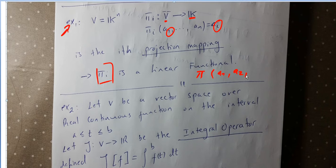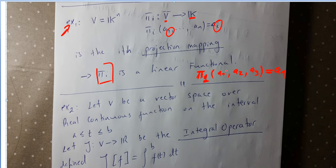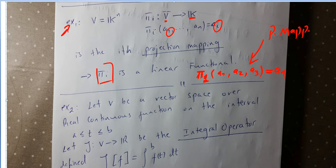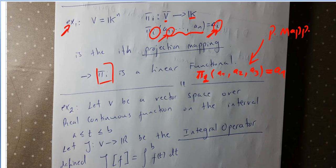For instance, pi_1 of (a1, a2, a3) equals a1. So for any i, pi_i takes one of the components — it maps the entire vector space into one of the scalar components. That is the projection mapping.